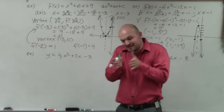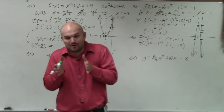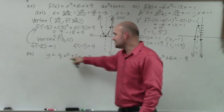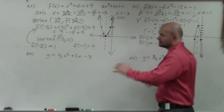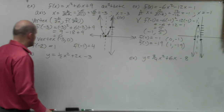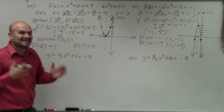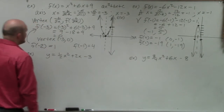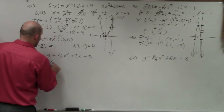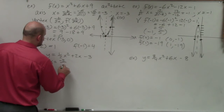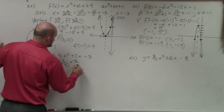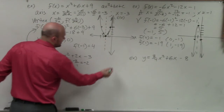Now for these next two, they have equations rather than functions, so I'll explain using equation notation — but the math is exactly the same. The axis of symmetry is x equals opposite of b, which is negative 2, divided by 2 times a, which is 1 half. Two times 1 half is 1, so it's negative 2 divided by 1, which equals negative 2. I graph the axis of symmetry at x equals negative 2.